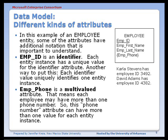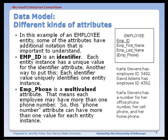The other attribute notated a little differently is emp_phone, and this is a multi-valued attribute. It has curly brace notation around it, and this indicates that the attribute might have more than one value for a particular entity instance. So Carla Stevens, for example, might have a phone number for her office, her cell, and her home phone.